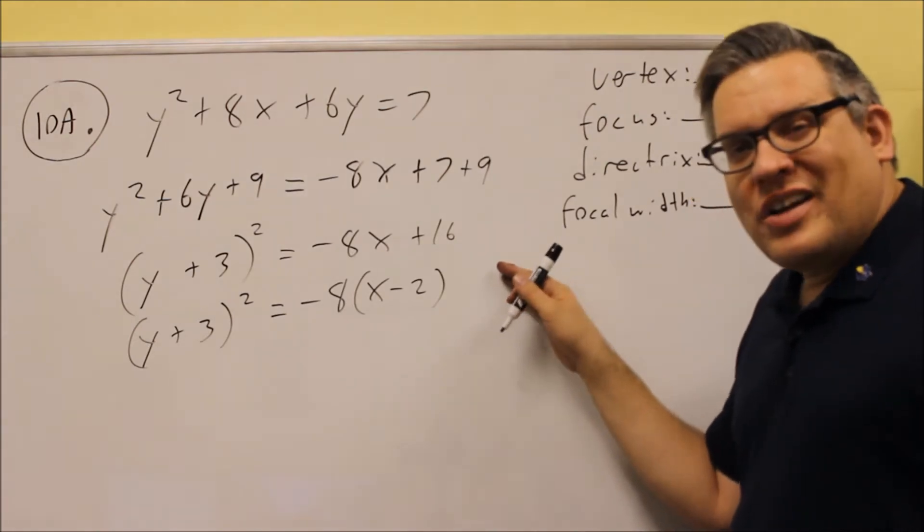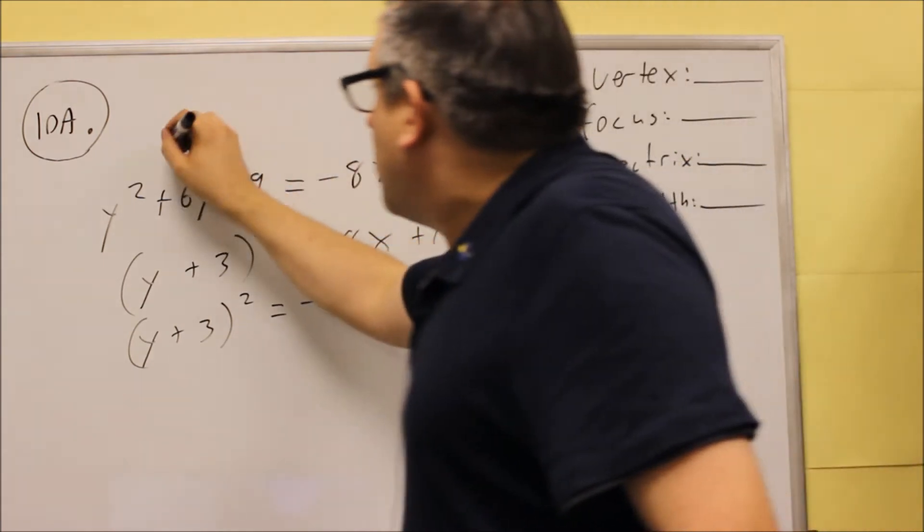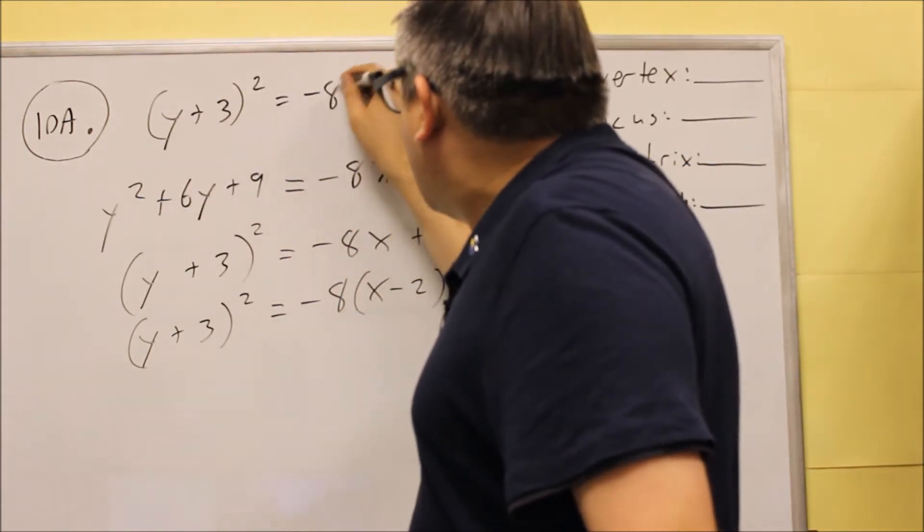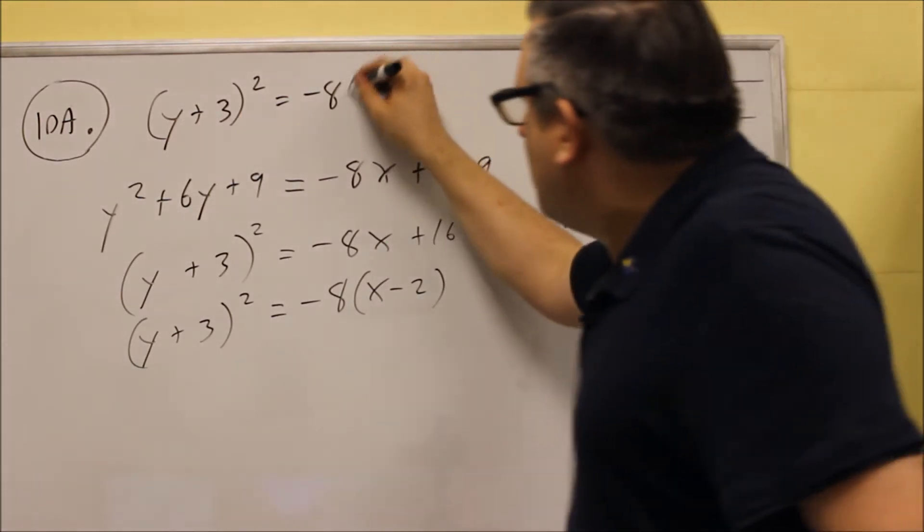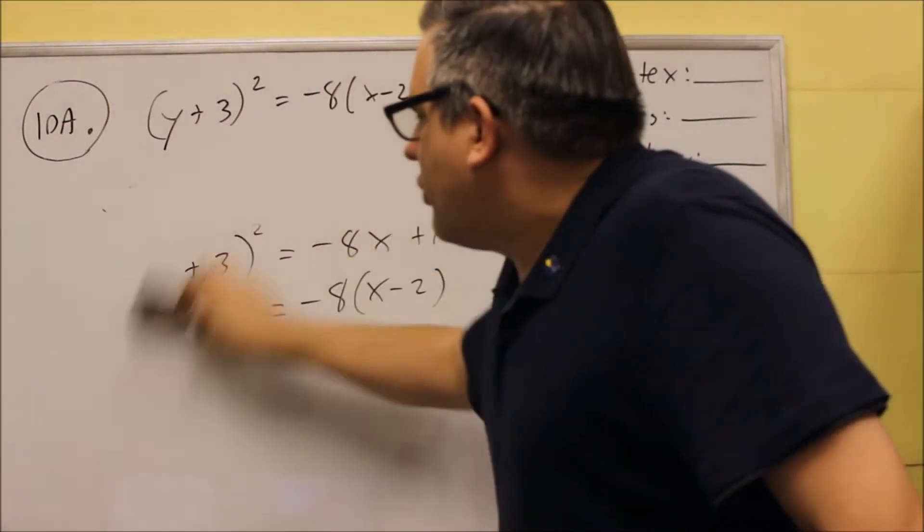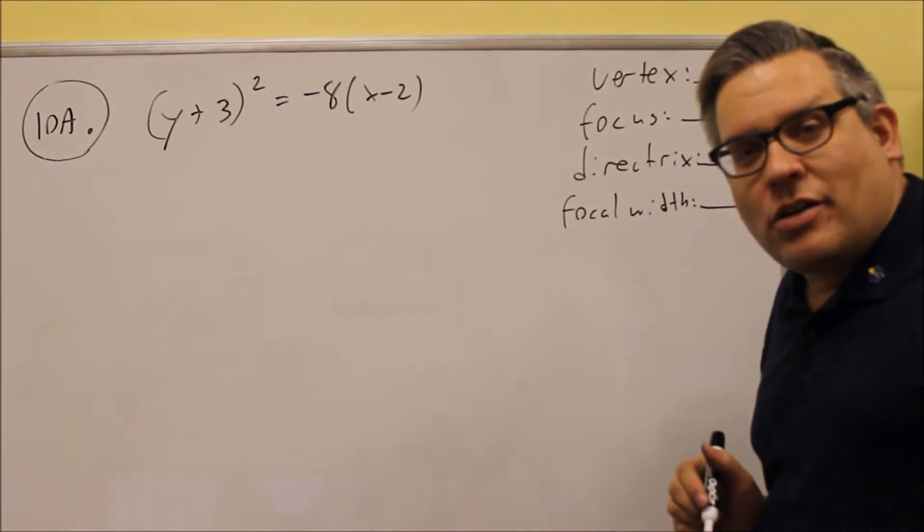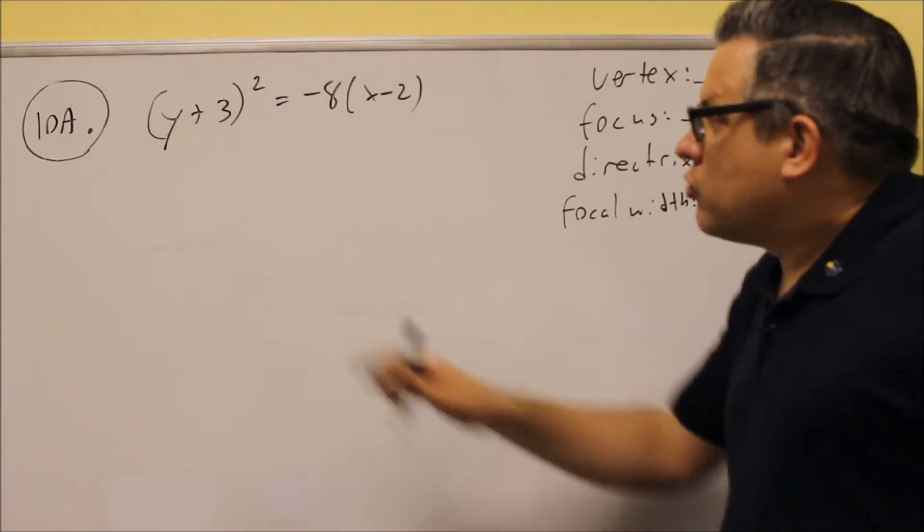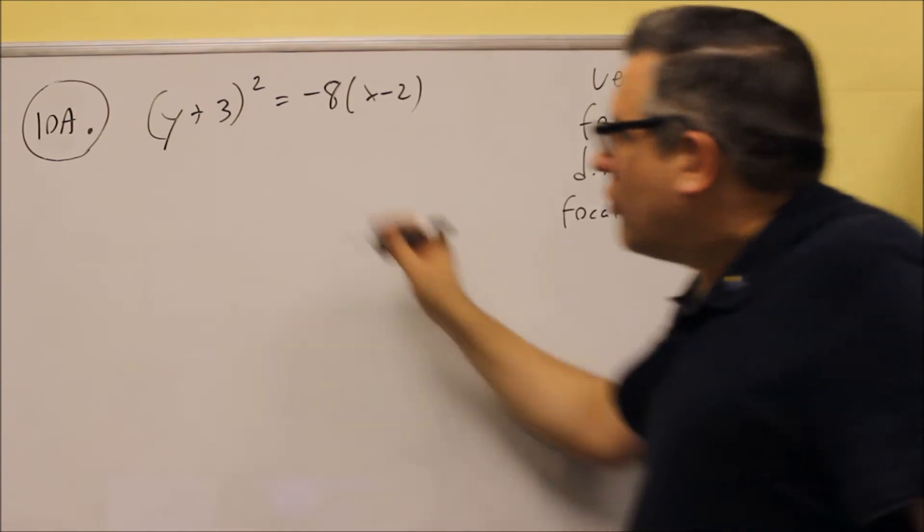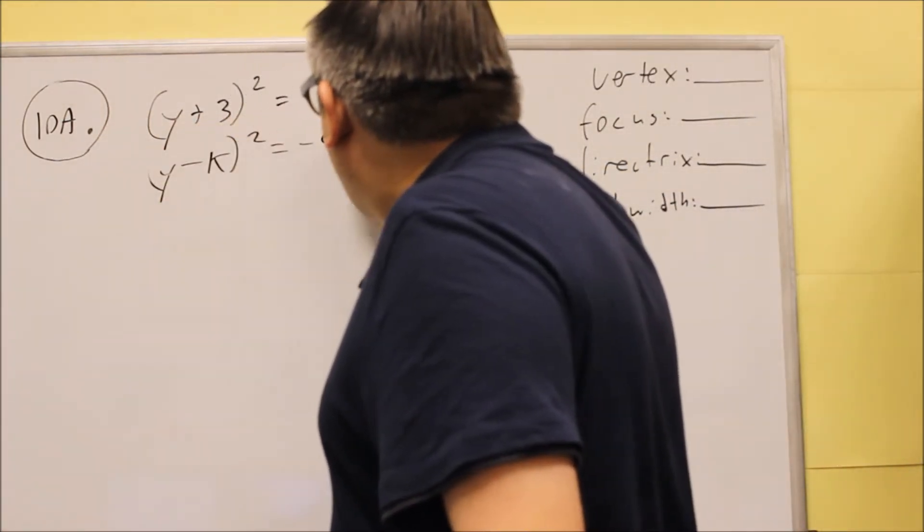This now is going to be the equation we're going to work with, so I can now erase this one and I'm going to put this up here. And this is what we're going to be working with to answer the blanks here. So I wanted to get it into that form. Now with it in that form, you want to look at the different models that are provided, and you want to see which one matches this formula. So if I look at the different models, I find that it matches this one.